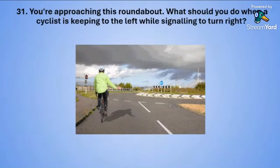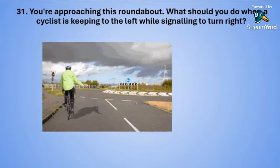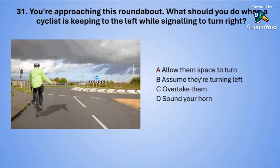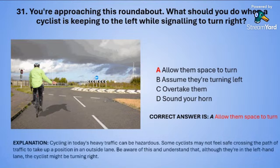Question thirty-one: You are approaching a roundabout. What should you do when a cyclist is keeping to the left but signalling to turn right? A: allow them space to turn. B: assume that they are turning left. C: overtake them. Or D: sound your horn. The correct answer is A — allow them space to turn.